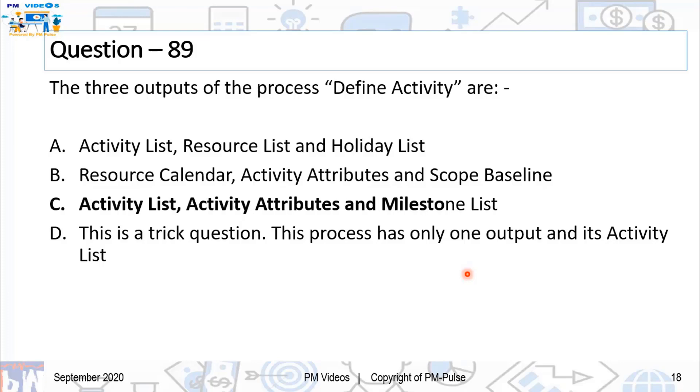And the correct answer is C, activity list, activity attributes, and milestone list. And if you like, go ahead and subscribe. And even if you don't, I have the best of wishes for you. Go ahead and ace PMP exams, and I really hope that we become a part of your PMP journey. Thank you for watching, and I hope that you do extremely well in PMP exams. Take care.